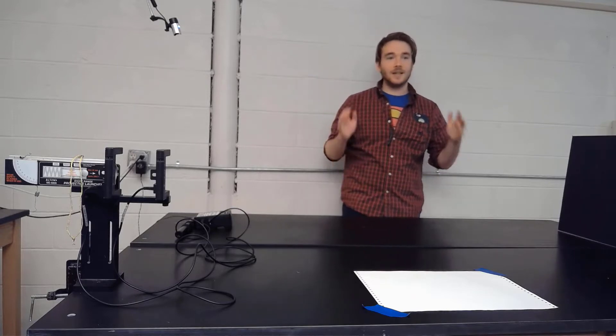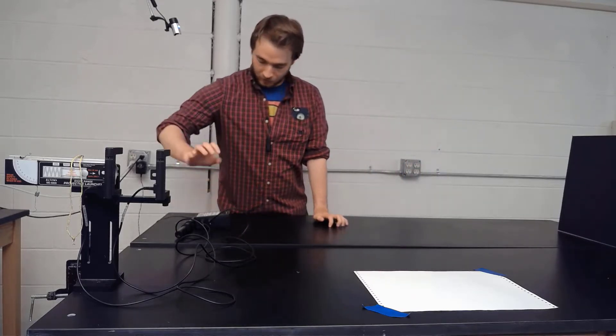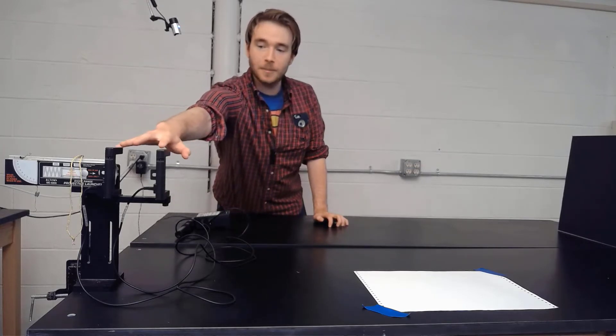So the first part of the lab is to try to measure what that initial velocity is, and how we're going to do that is through the use of this smart timer here with these two gates up front.